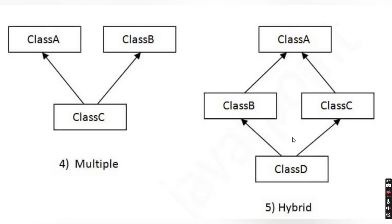That was the practical implementation of hierarchical inheritance. There are two more types: multiple inheritance, where a single class extends two different classes — but in Java, multiple inheritance is not supported. We will see in the next video why multiple inheritance is not supported. The last type is hybrid inheritance, which is a combination of all four inheritance types.